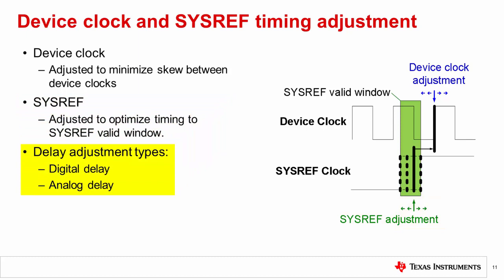Two common delay adjustment implementations are digital delay and analog delay. Digital delay is considered a coarse timing adjustment. The next few slides will illustrate different cases to calculate the margin for sysref clock to the edge of the valid window. The digital delay step size relates to the period of the clock driving the divider used for sysref output, which may be the VCO. For example, a 3 GHz clock would have a half-step adjustment of approximately 166.7 picoseconds. Analog delay is considered a fine timing adjustment and typically offers timing adjustments in the range of 10 to 150 picoseconds per step. In general, the timing variation when including analog delay adjustments will be greater over environmental conditions than if digital delay alone is used.